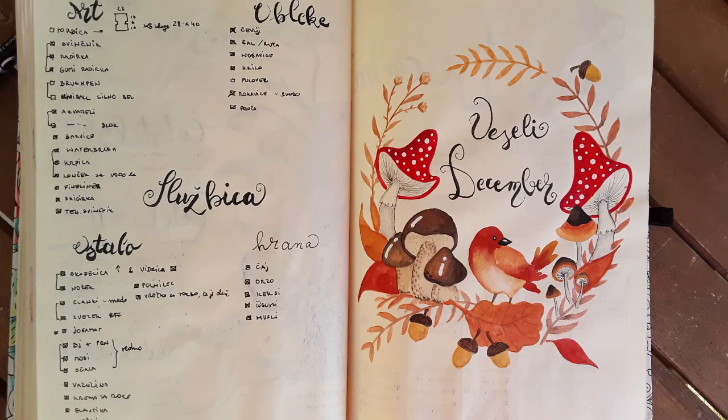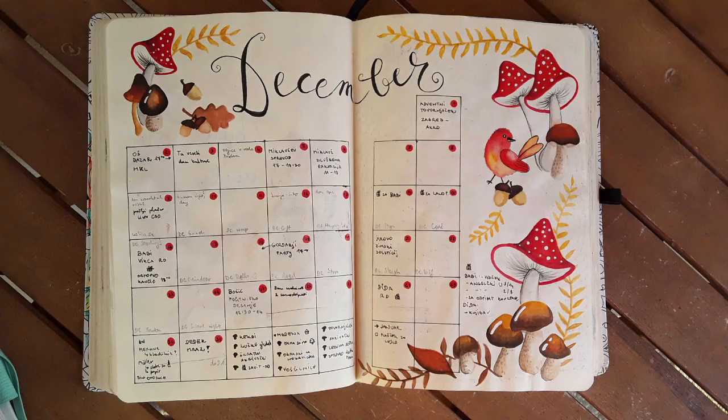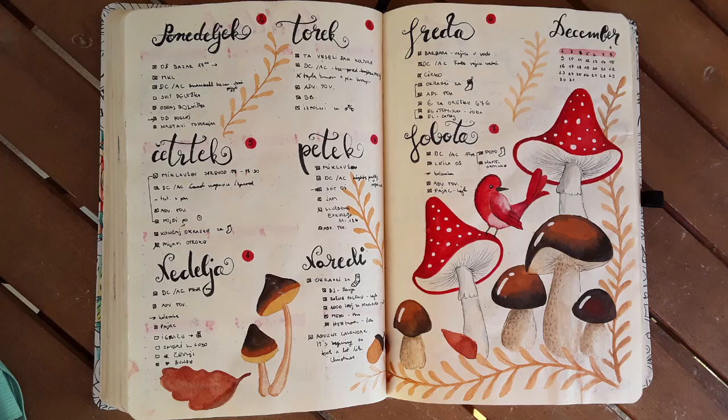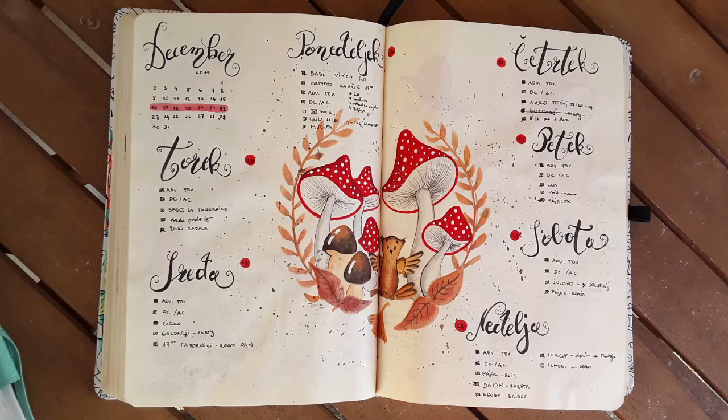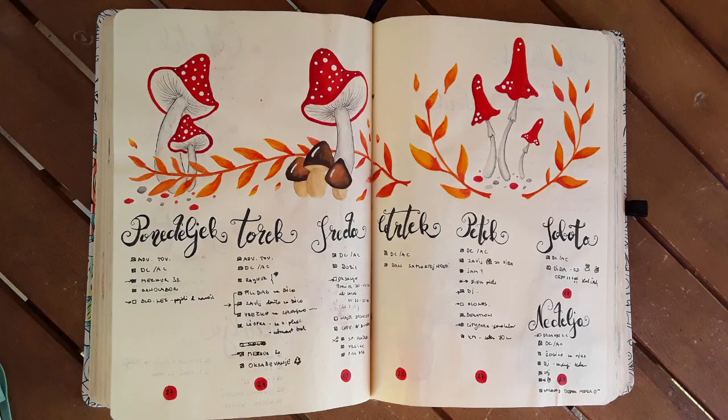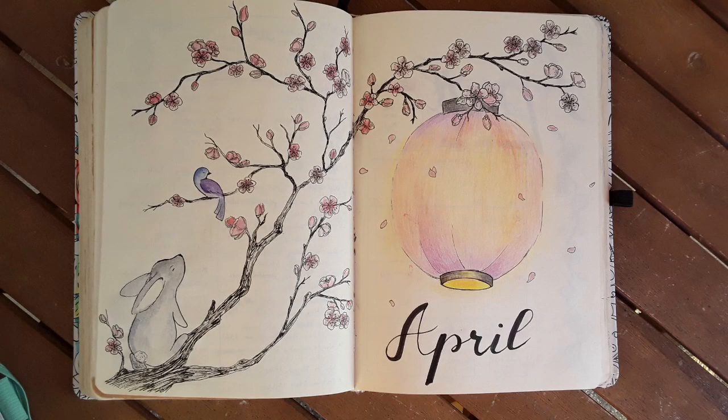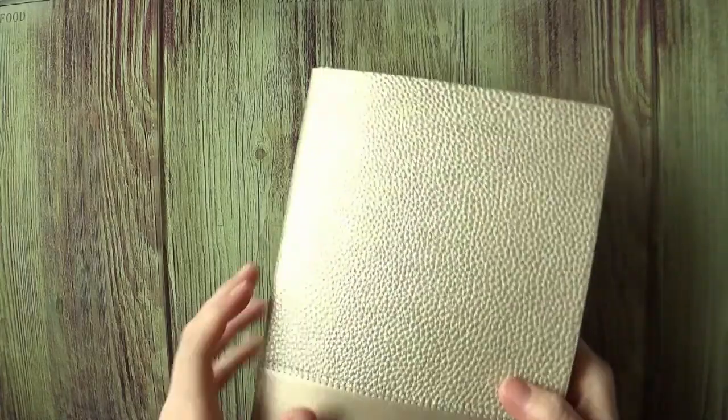Why is it called bullet journal? Because you make bullets of tasks and events and everything you have to do, and you're also supposed to journal in this notebook. Personally I don't journal in these expensive notebooks. I got this one from my daughter and there's no way I will just use it to scribble some thoughts. It would feel too precious. I just use normal notebook to journal.